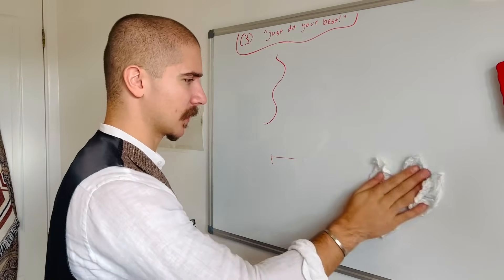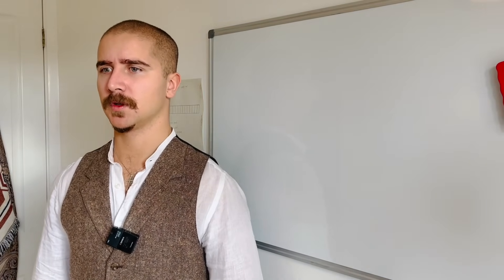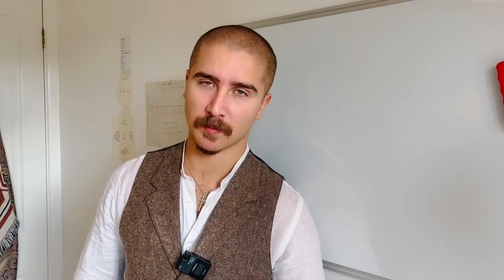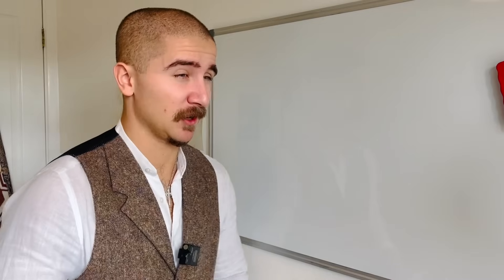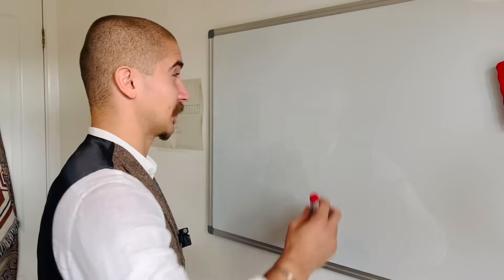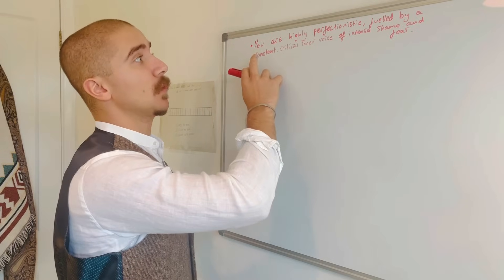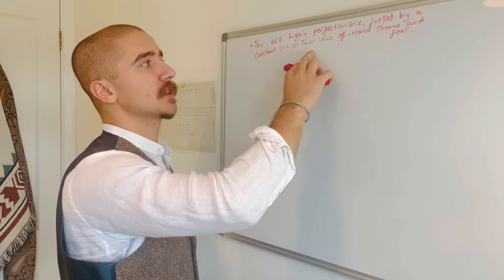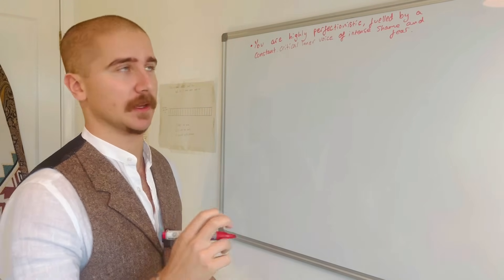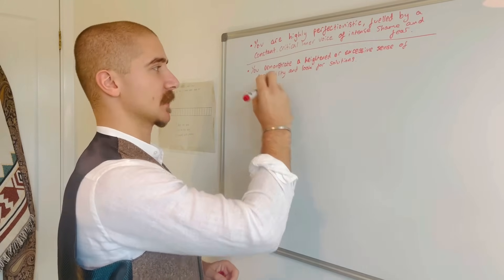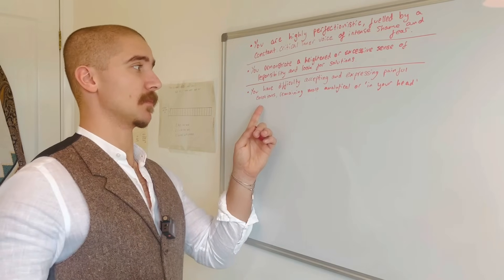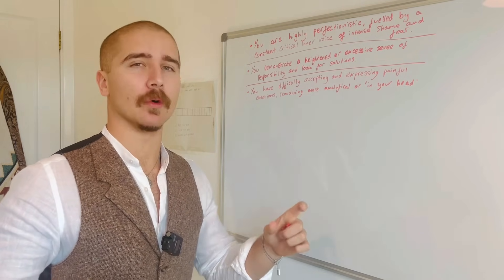Now let's cover the five ways to conquer perfectionism. But before we do, you probably won't want to hear this, but do you remember at the beginning I said perfectionism, also spelled paralysis or known as hidden depression? Yeah, this hidden depression thing - there's a psychotherapist who's written a whole book about it. And here are 10 signs that you might have this hidden depression. First up, you are highly perfectionistic, fueled by a constant critical inner voice of intense shame and fear. You demonstrate a heightened or excessive sense of responsibility and look for solutions.